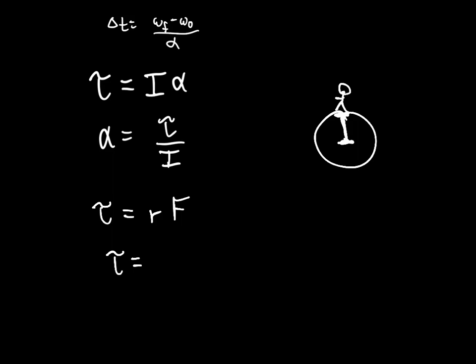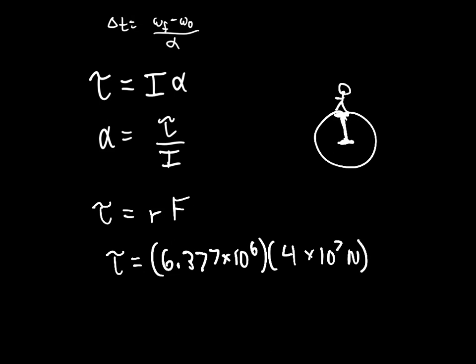Torque equals 6.376 times 10 to the 6 meters times 4 times 10 to the 7 Newtons, giving approximately 2.55 times 10 to the 14 Newton-meters. Now I need the moment of inertia. For a sphere: I equals two-fifths times M times R squared. Plugging in the mass of the Earth — 5.979 times 10 to the 24 kilograms — and radius squared gives I equals 9.72 times 10 to the 37 kilogram-meters squared.